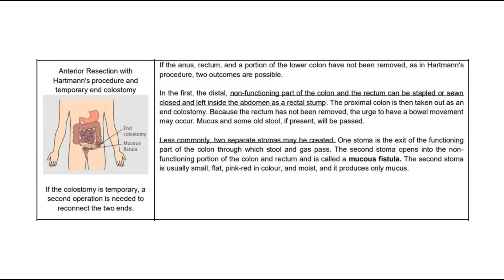In the first outcome, the distal non-functioning part of the colon and rectum can be stapled or sewn closed and left inside the abdomen as a rectal stump. The proximal colon is then taken out as an end colostomy. Because the rectum has not been removed, the urge to have a bowel movement may occur, and mucus and some old stool, if present, will be passed. Less commonly, two separate stomas may be created — one for the functioning part of the colon through which stool and gas pass, and a second opening into the non-functioning portion called a mucus fistula. The second stoma is usually small, flat, pink-red in color, moist, and produces only mucus.